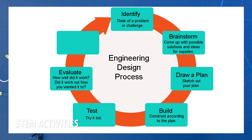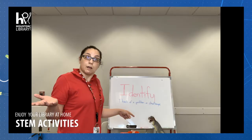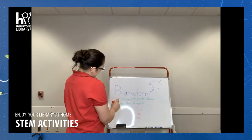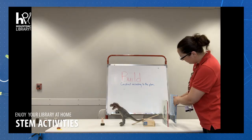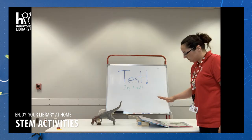The first step is to identify — think of a problem or challenge — and then brainstorming, which is coming up with possible solutions and ideas for supplies. The next step is drawing a plan, so you're sketching out your plan to get a better idea of all the different parts. Then you're going to build and construct according to your plan. Next is testing it, trying it out.